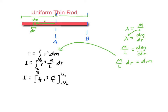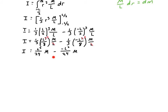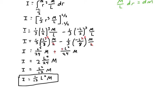Evaluating at the limits: (L over 2) cubed equals L cubed over 8, and (negative L over 2) cubed equals negative L cubed over 8. Subtracting a negative means adding, giving 2 times L cubed over 8. Combined with 1 over 3 and M over L, I cancel one factor of L from numerator and denominator to get L squared, yielding 2ML squared over 24, which simplifies to one twelfth ML squared — the moment of inertia for a uniform thin rod rotating about its center of mass.